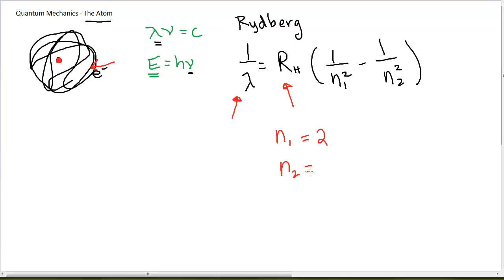And specifically, when n1 is the numerical value of 2 and n2 is the numerical value of 3, I see one of the lines in the spectrum of hydrogen. When n1 is the value of 2 and n2 is the value of 4, I see a second line in the spectrum of hydrogen. And when I plug in n2 equals 5, I see a third line and so on, just to the limits of my vision.